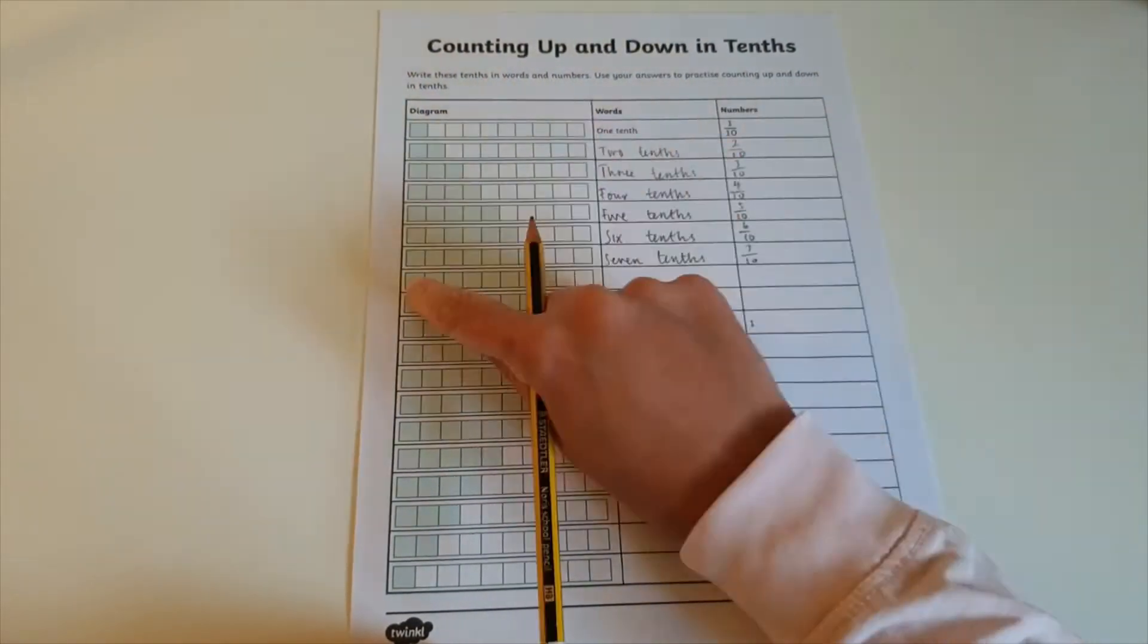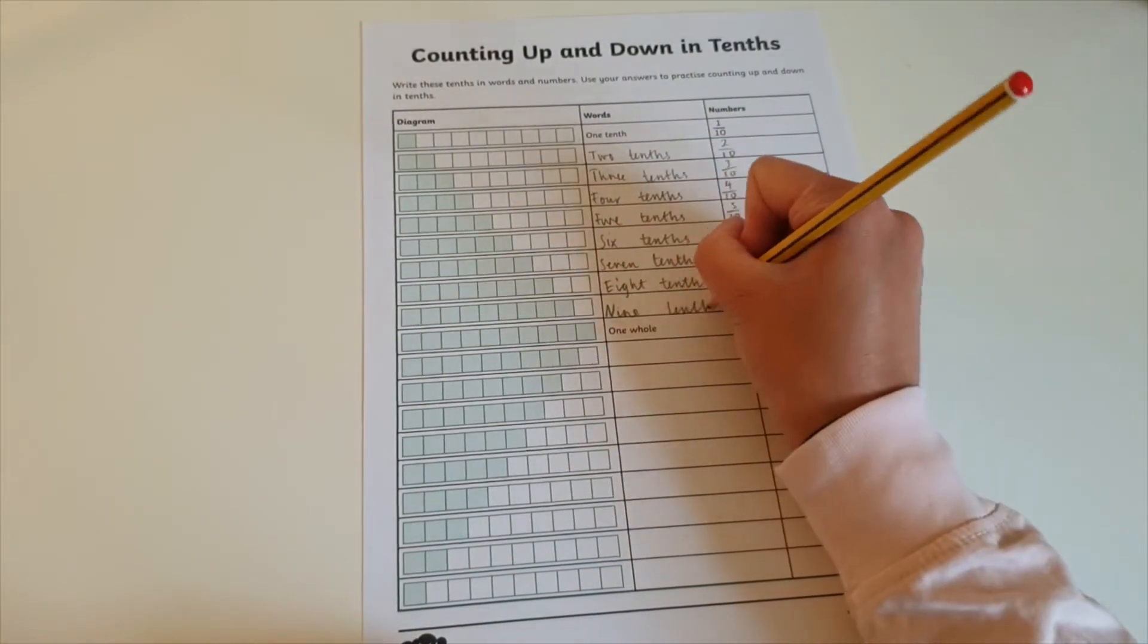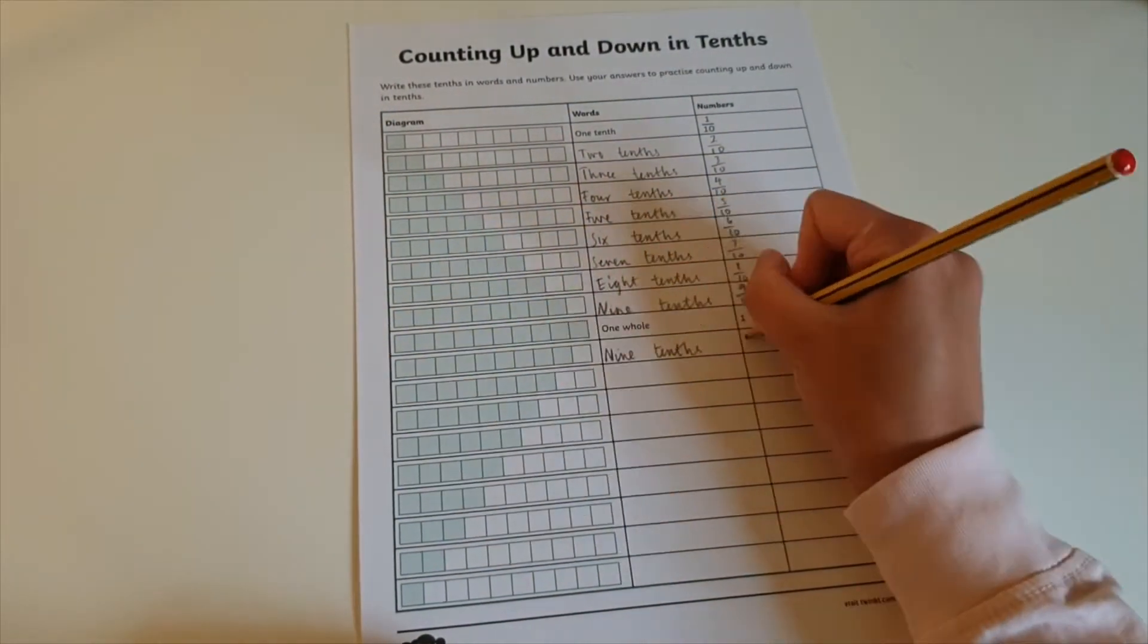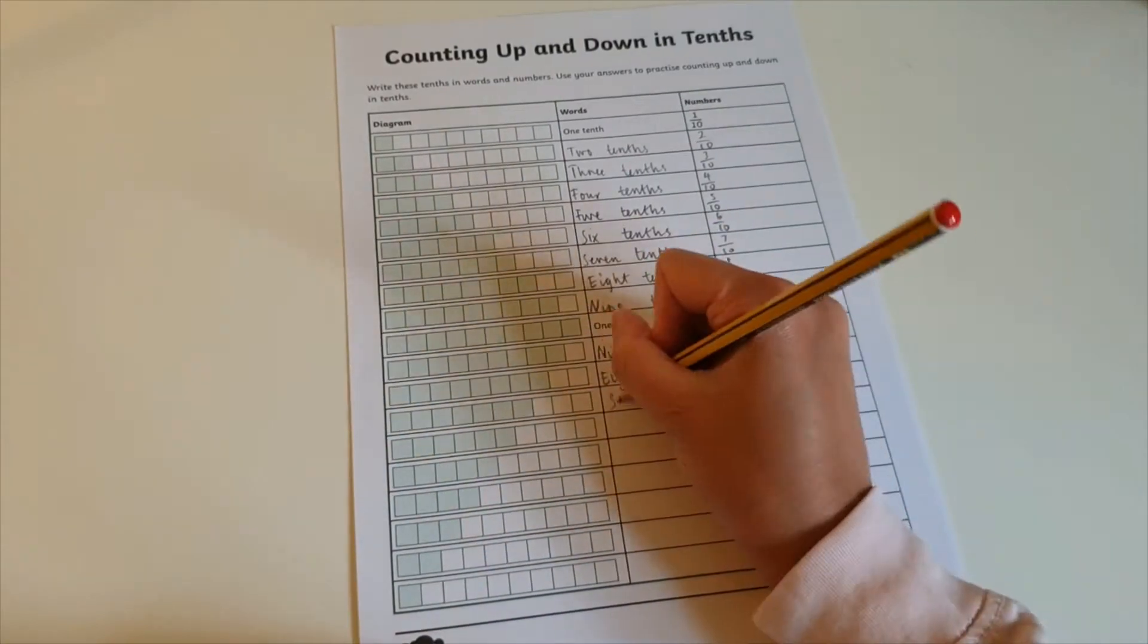As each whole has been divided into tenths, children must identify the tenths shaded in words and numbers by counting and practicing up and down.